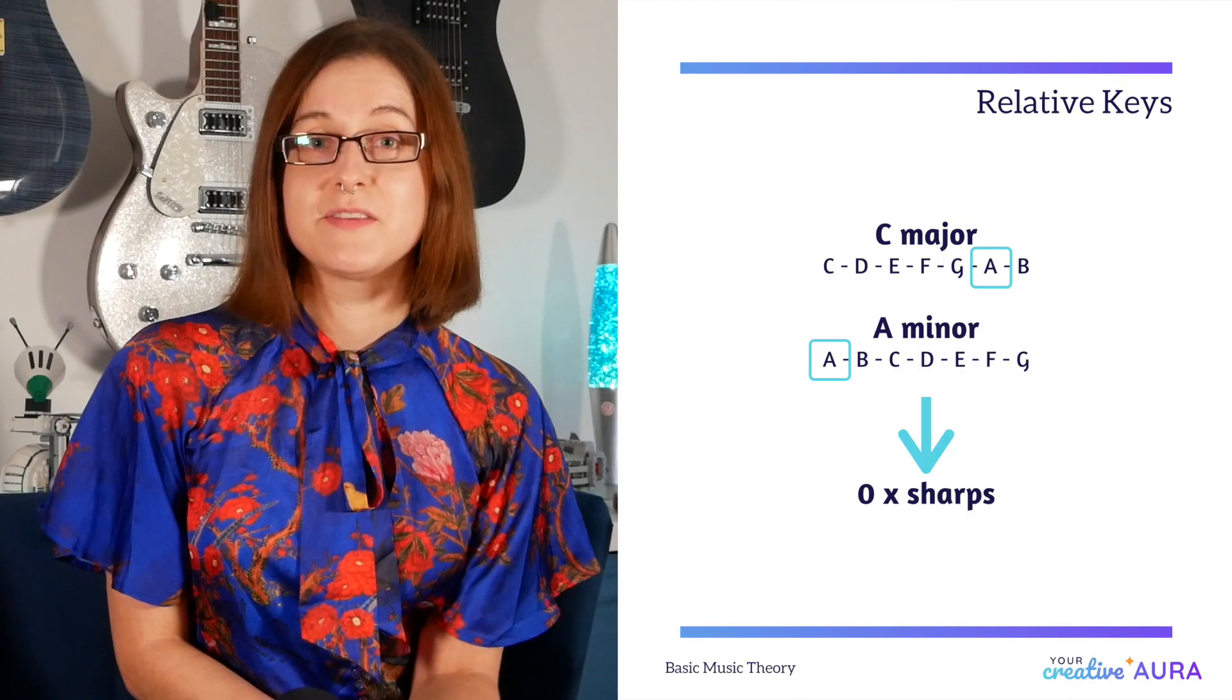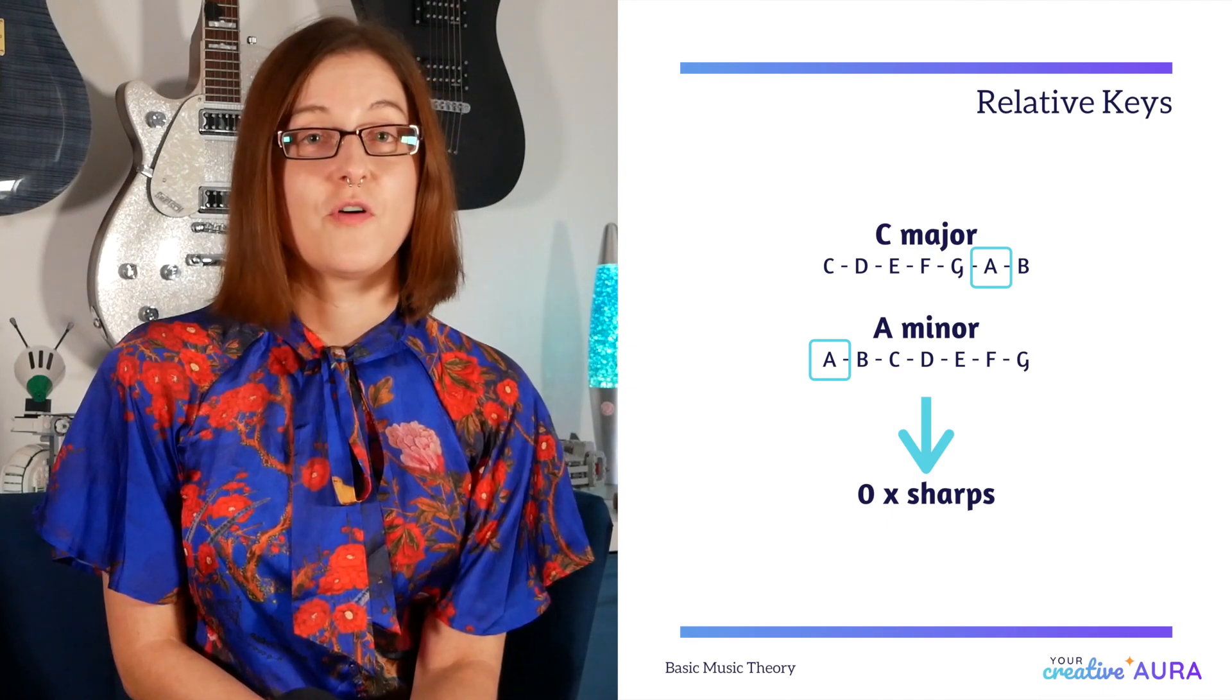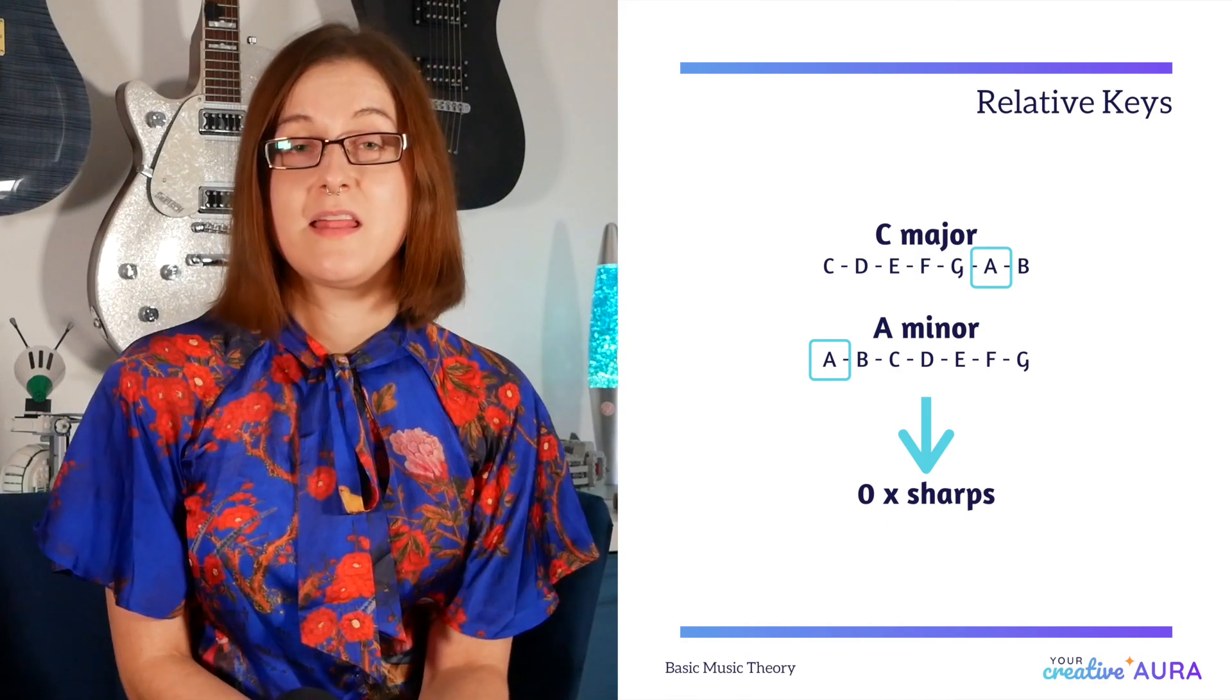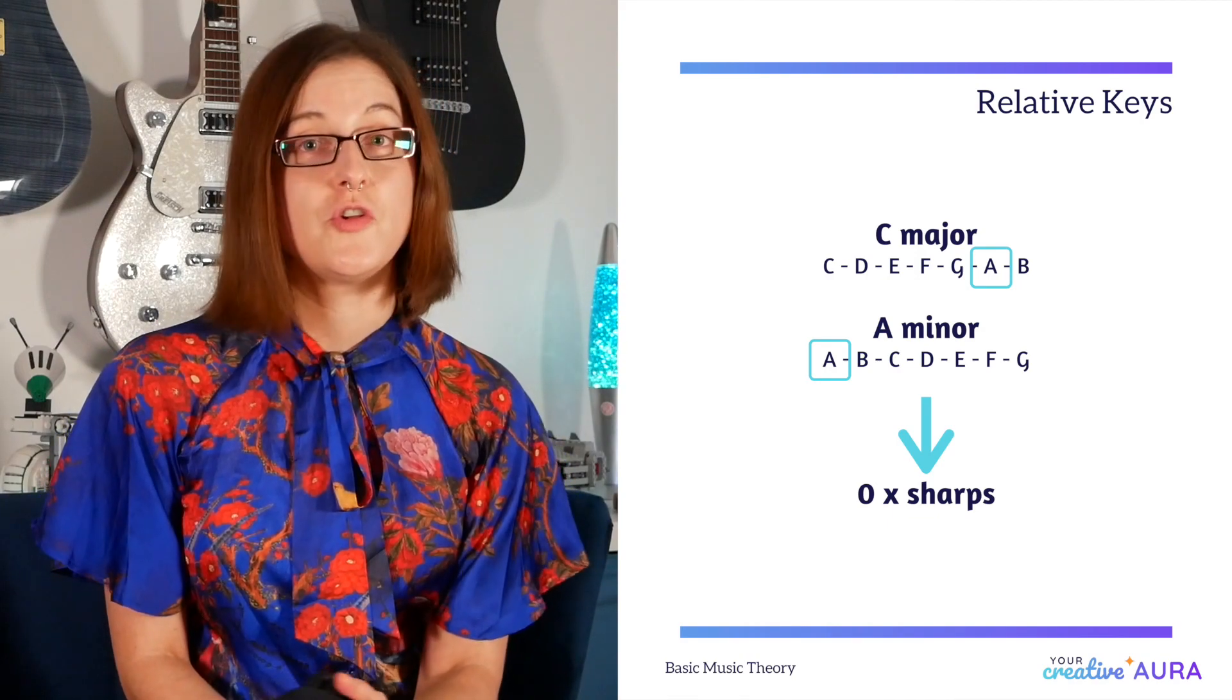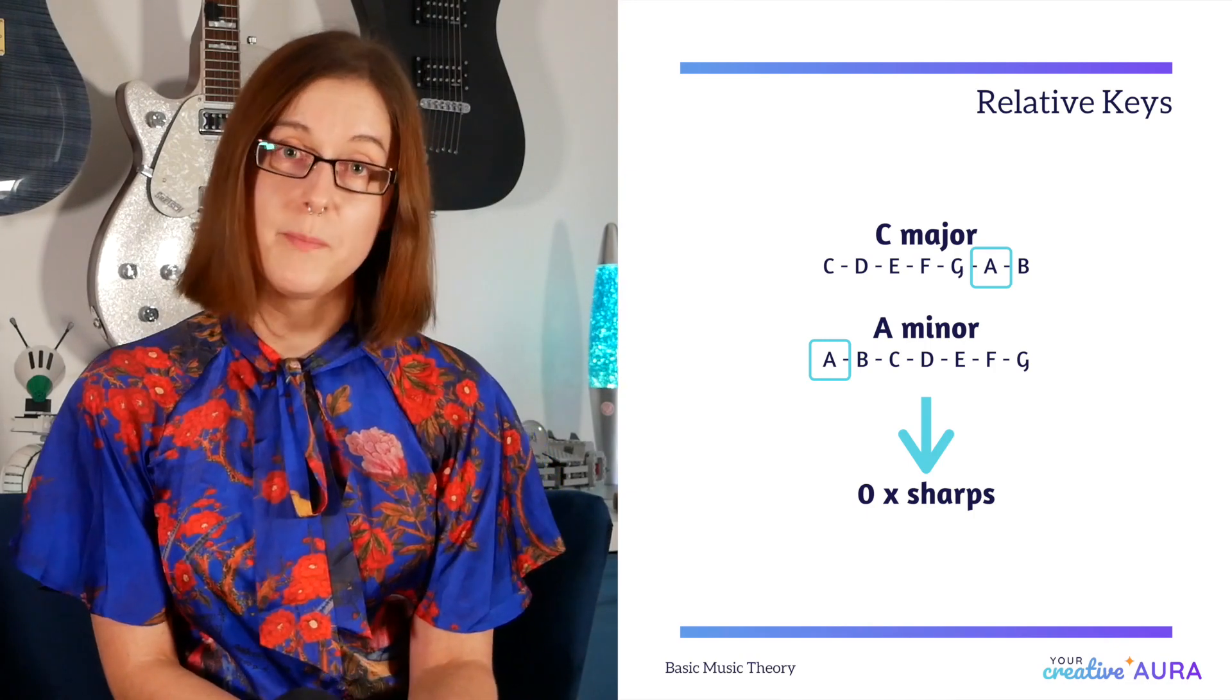We also have C major. The sixth note in the scale is an A. Therefore A is a relative minor to C major. Their key signature is no sharps and no flats, as the scale only contains natural pitches.